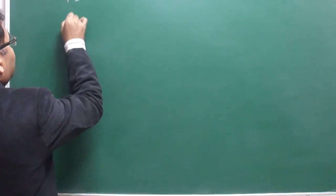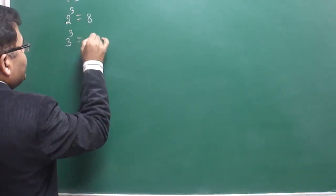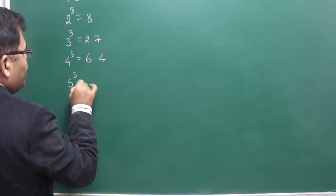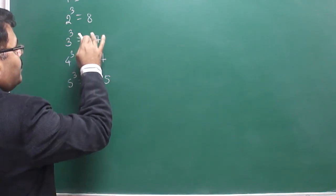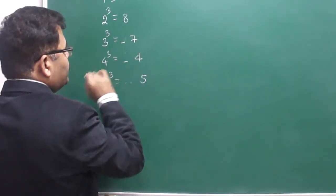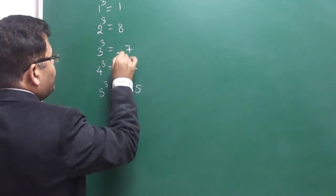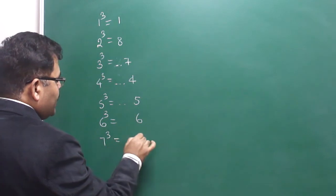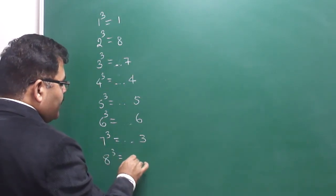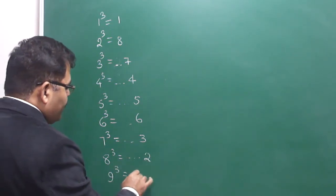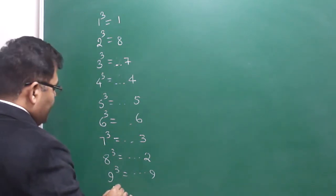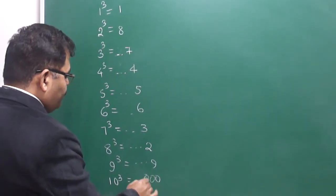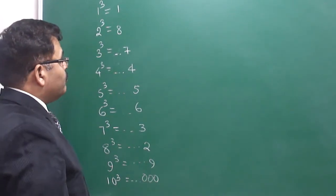1 cubed is 1. 2 cubed is 8. 3 cubed is 27, so 7 is at the unit place. 4 cubed is 64, so 4 is at the unit place. 5 cubed is 125, so 5 is at the unit place. We will look at the unit place only. 6 cubed — unit place will be 6. 7 cubed — 3 will be at the unit place. 8 cubed is 512, so 2 will be at the unit place. 9 cubed is 729, so 9 will be at the unit place. 10 cubed is 1000, so 0 will be at the unit place — three zeros will come.